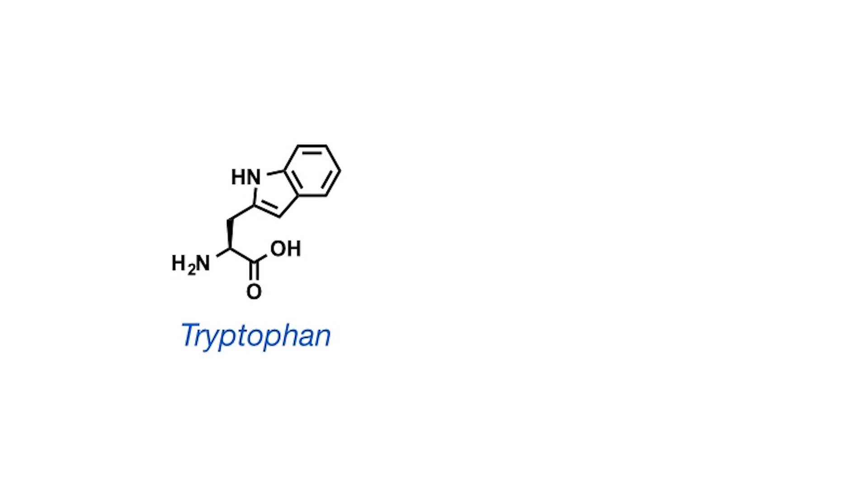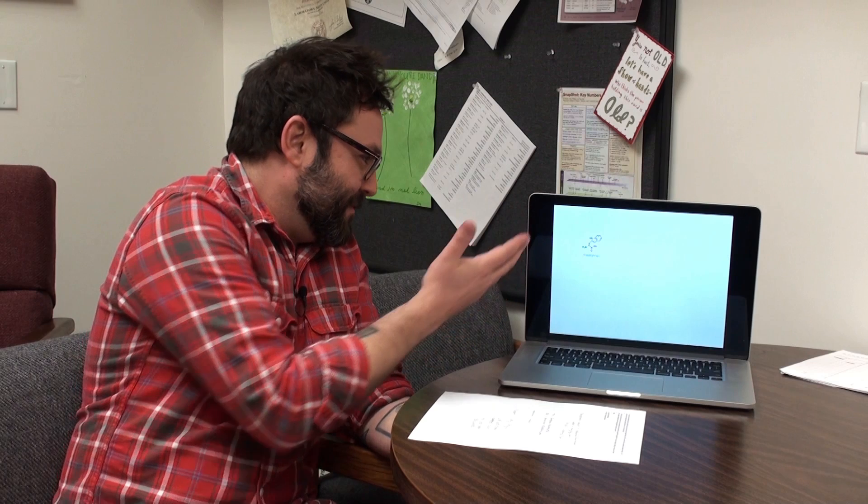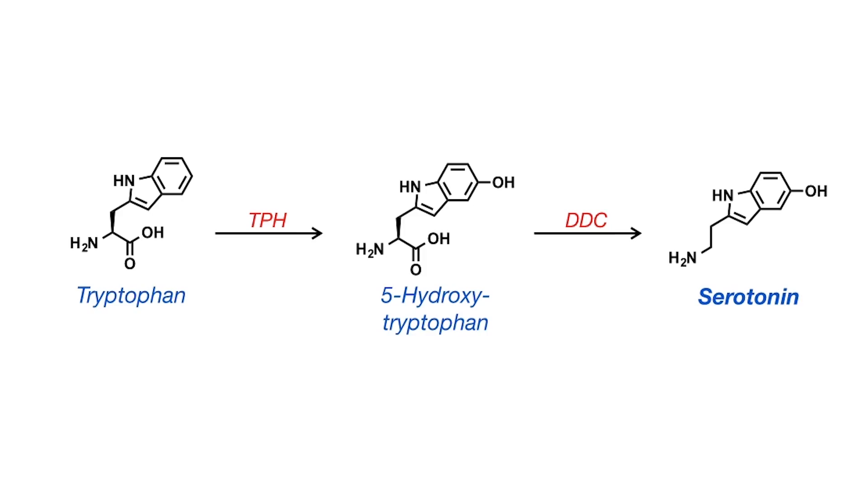And so shown here is a structure of tryptophan in sort of organic chemistry shorthand. Some of your viewers may be able to recognize that. Others may not. It doesn't really matter. All we're really looking for is similarities in these structures.